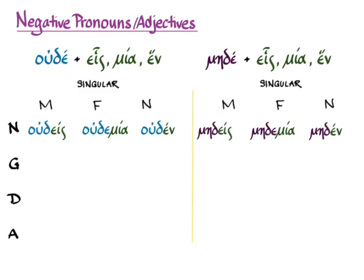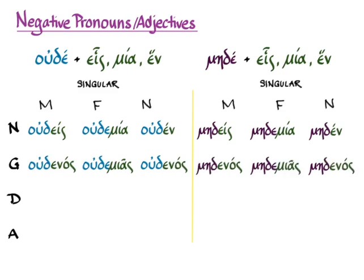The genitive is oudenos, oudemias, oudenos — and maydenos, maydamias, maydenos.